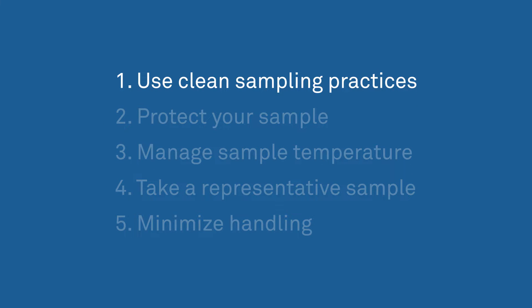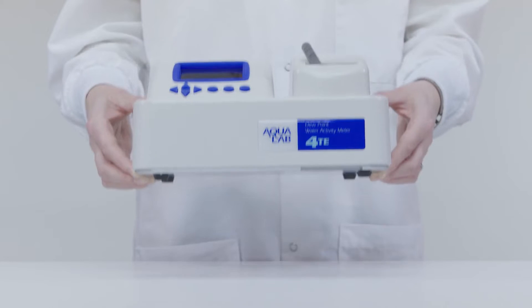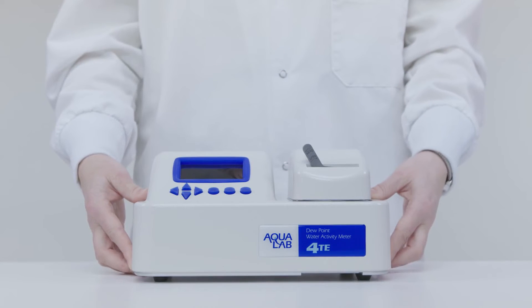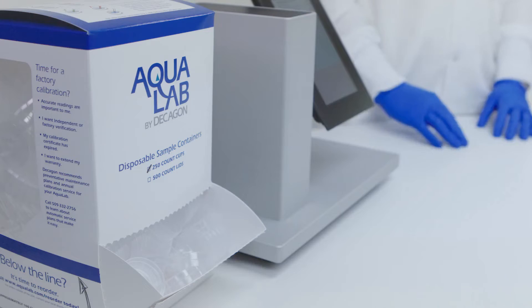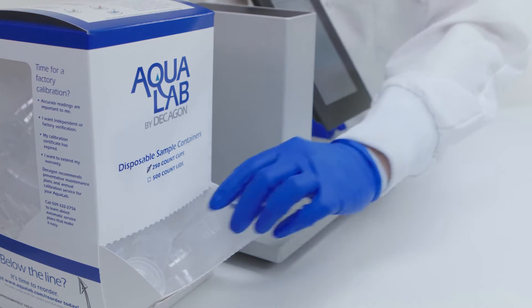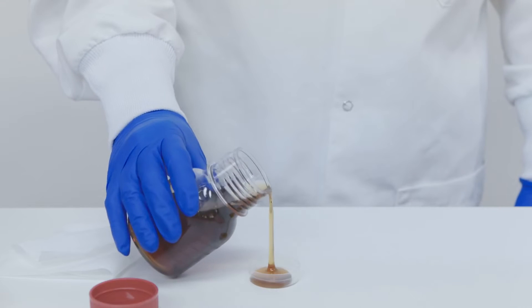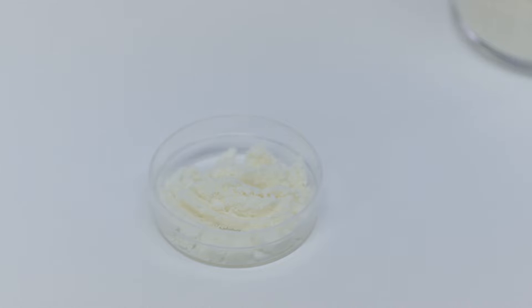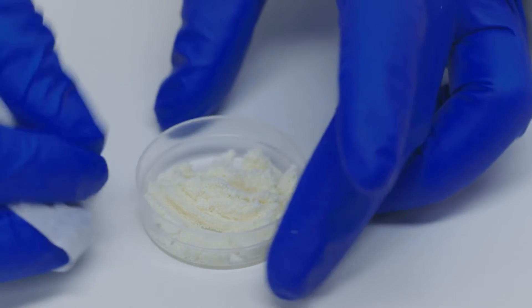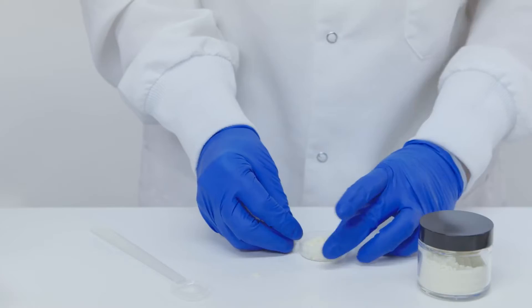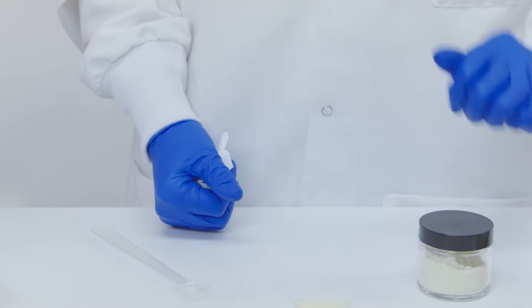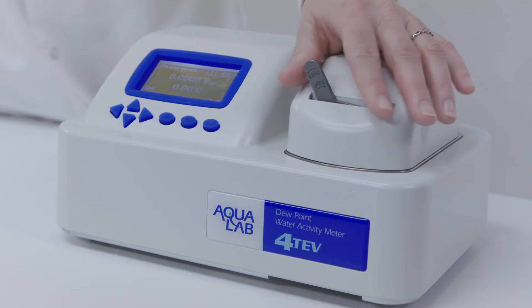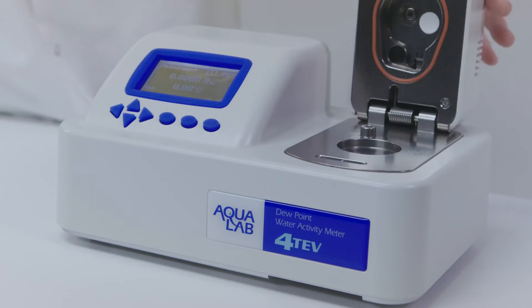One, use clean sampling practices. Place your instrument in a clean location. Make sure you have clean hands or wear lab gloves. Use a clean sample cup for each reading. Fill your sample cup no more than half full. Wipe the bottom, the edges, and the rim of your sample cup with a Kimwipe before putting it in the instrument, so you don't contaminate the sample chamber. Even small amounts of water or contamination can significantly affect the reading.